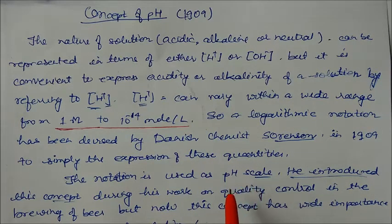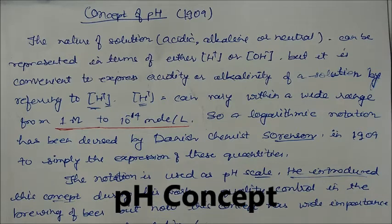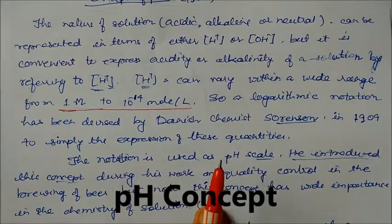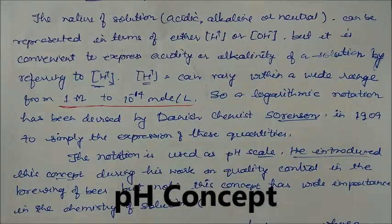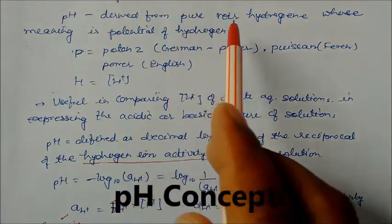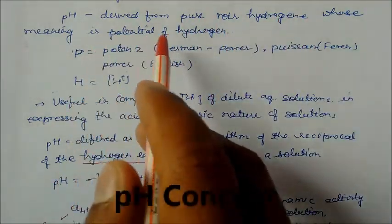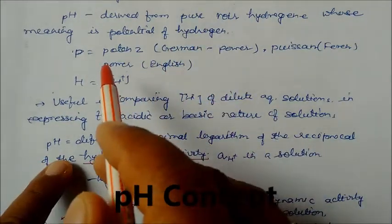To simply express these quantities, this notation is used as pH scale. He introduced this concept during his work on quality control in the brewing of beer. Now this concept has wide acceptance in the chemistry of solutions. The term pH is derived from pure wire hydrogen, whose meaning is potential of hydrogen.